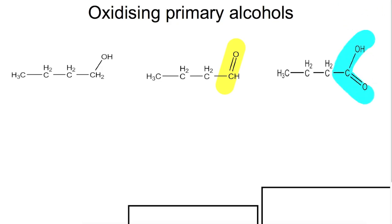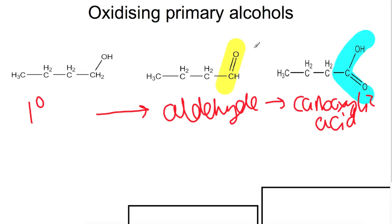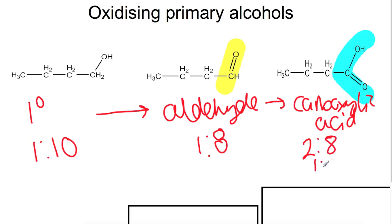You'd recognise this as a carboxylic acid. So when we're looking at oxidising primary alcohols, we go from having a primary alcohol to what we would call an aldehyde, where this carbonyl group is on the end carbon, and then to a carboxylic acid. As you go from the alcohol to the aldehyde to the carboxylic acid, you get an increase in the oxygen to hydrogen ratio. For the primary alcohol it's 1 to 10, in the aldehyde it's 1 to 8, and in the carboxylic acid it's 2 to 8, which would also be 1 to 4.